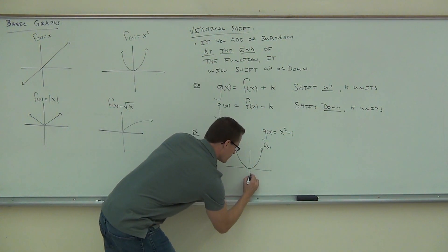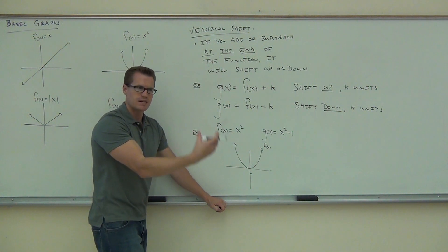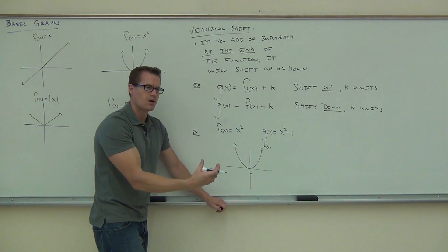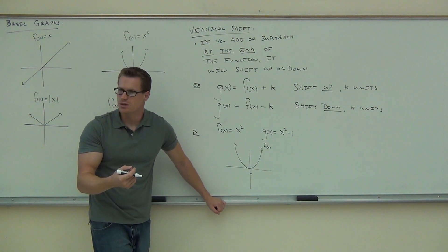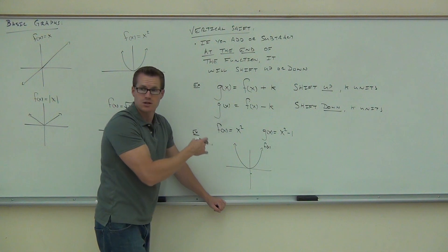I'm going to think about my graph and I'm going to shift it, what was it, up or down? Down one spot everywhere. Really, what you've got to think about is just the vertex of this thing. If I shift down the vertex and redraw that graph, it's going to be in the right spot.